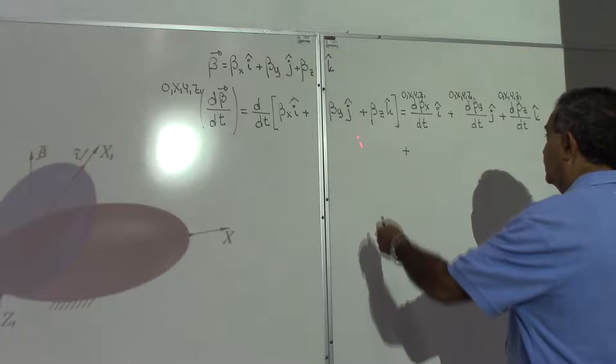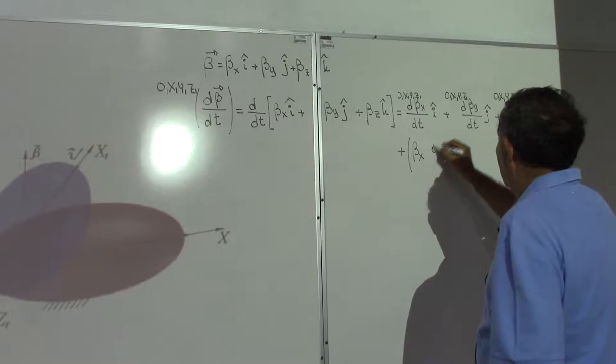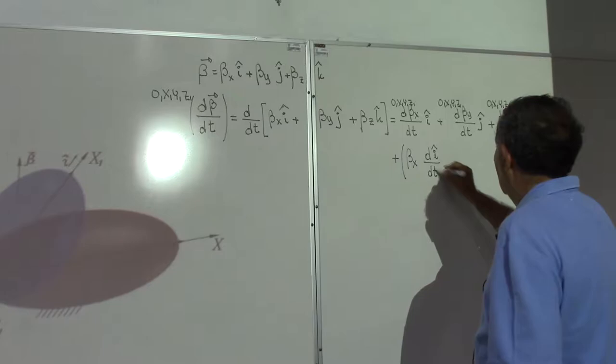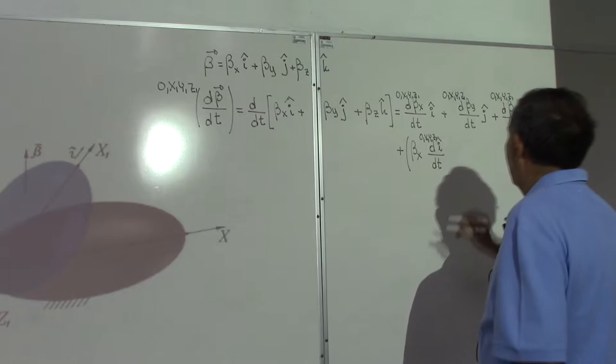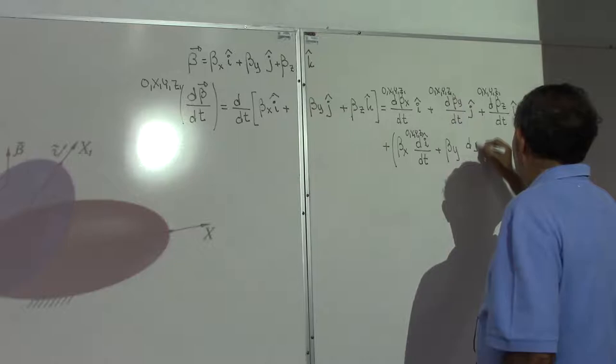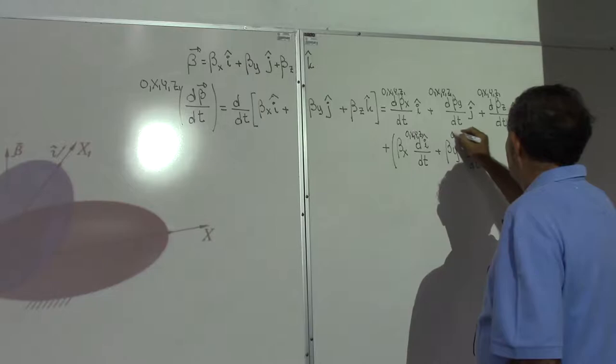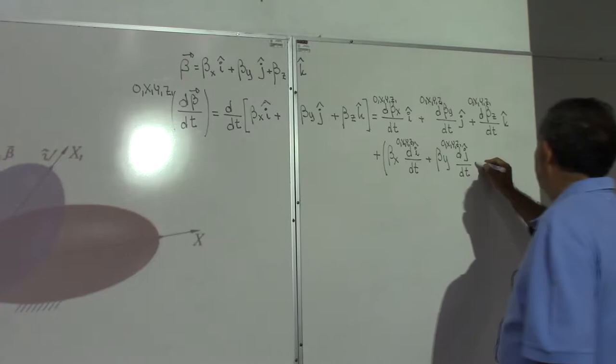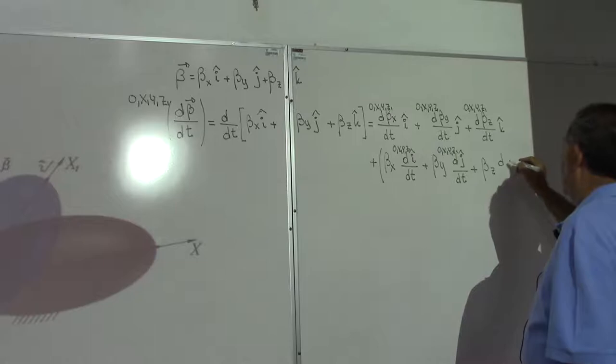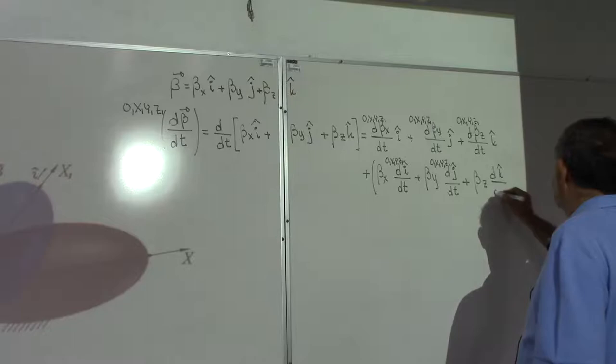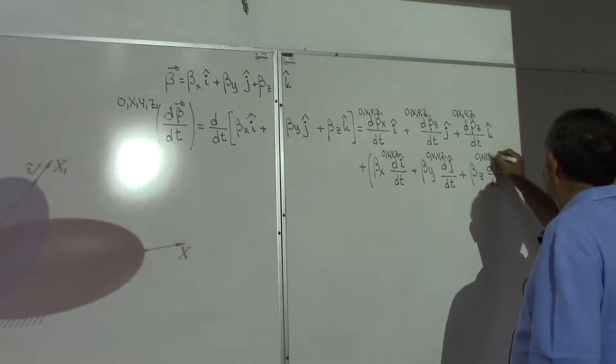Now we have to consider the time derivatives of the unit vectors. This is going to be equal to bx times the time derivative of unit vector i with respect to time and with respect to the moving reference frame O1, x1, y1, z1, plus by times the time derivative of unit vector j with respect to the moving reference frame O1, x1, y1, z1, plus beta z times the time derivative of unit vector k with respect to time and O1, x1, y1, z1.